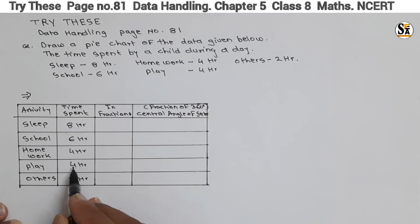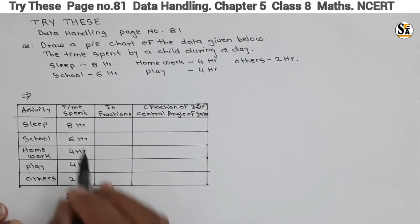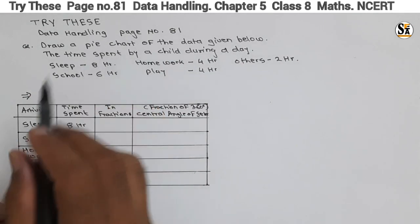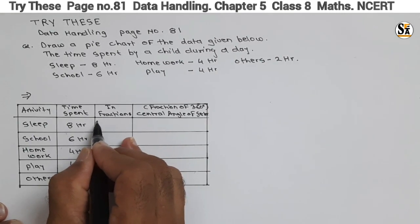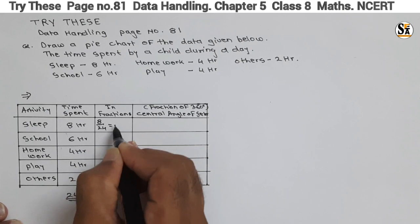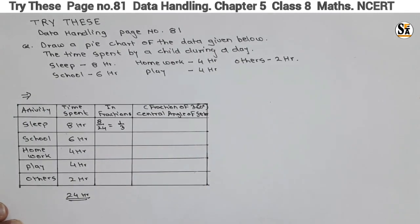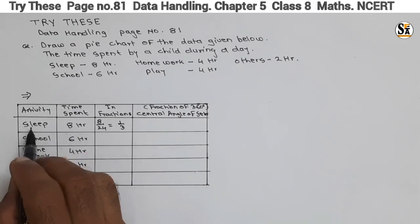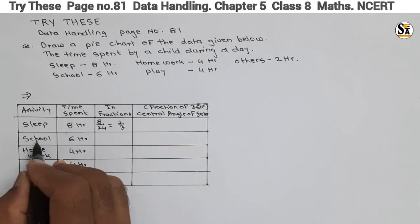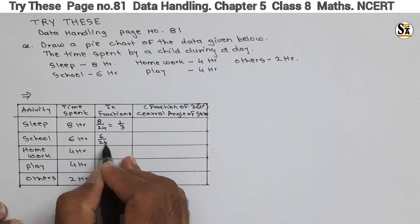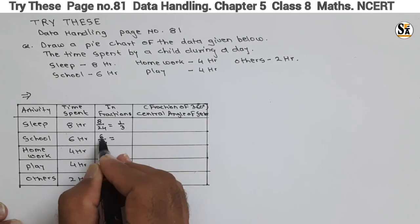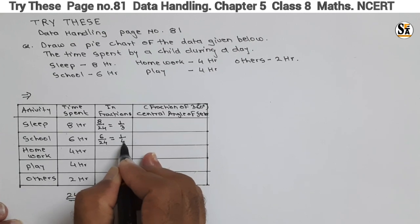Now in the next column we calculate the fraction. Out of 24 hours, for sleep the fraction is 8 by 24, which equals one third. For school: 6 by 24, which equals 1 by 4. For homework: 4 by 24, which equals 1 by 6.